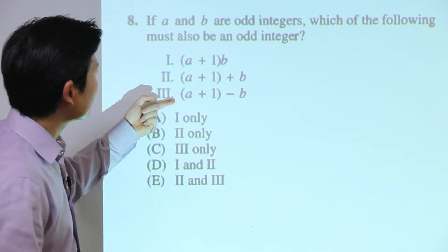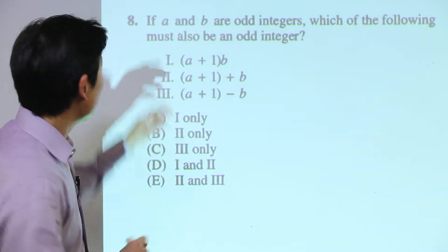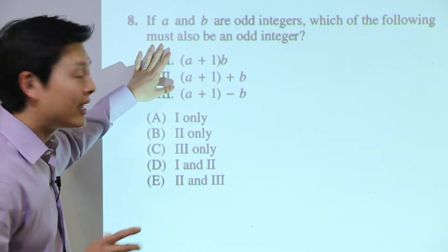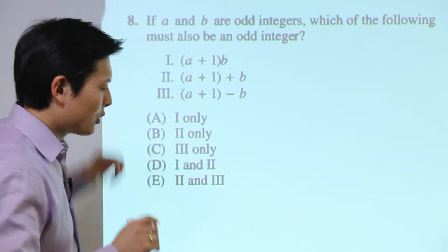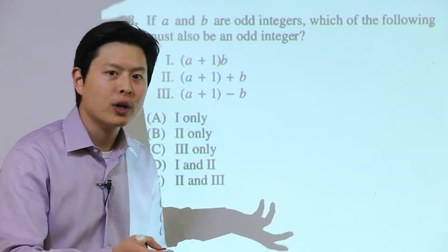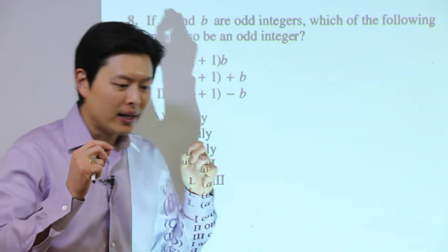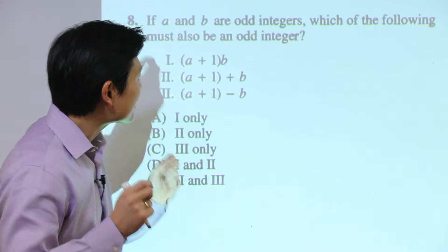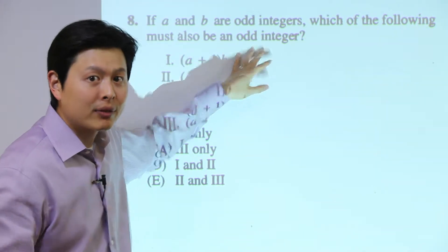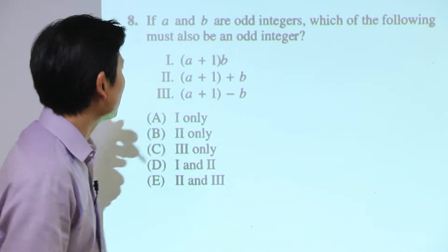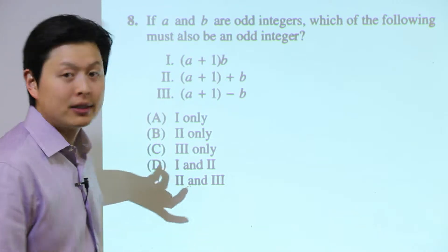Be careful — this is a must-be-true question, not a could-be-true question. We're not looking for just one instance where it works; we're making sure that in each case it's always an odd integer, every single time.